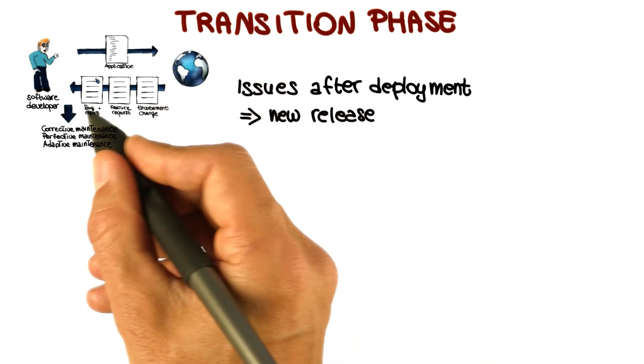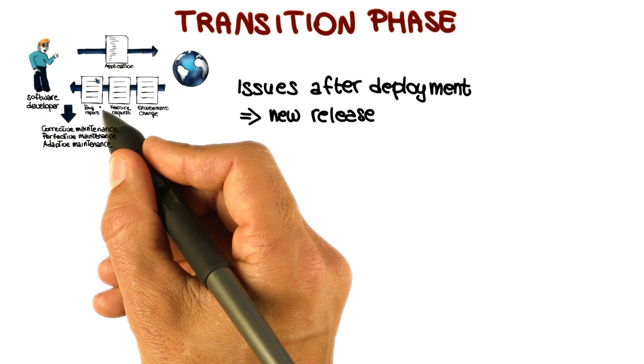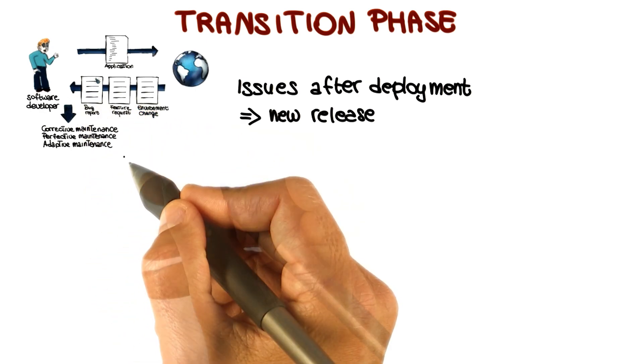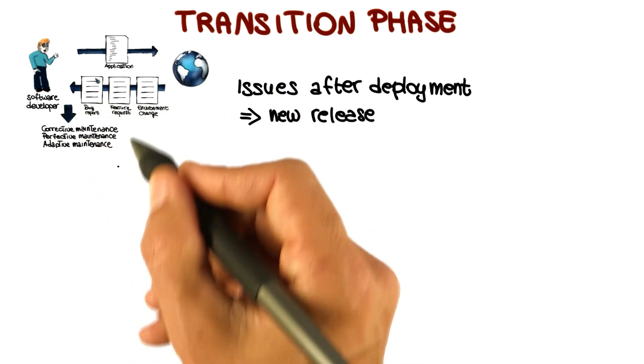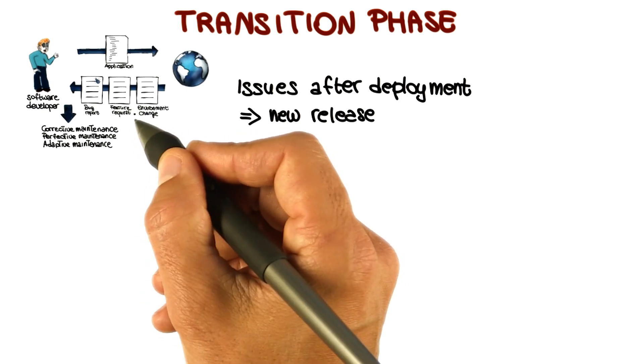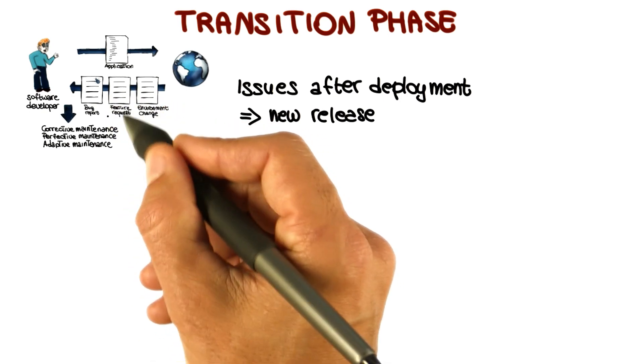Specifically, users might report failures that they experienced while using the system, so what we call bug reports, or they might report improvements that they might want to see in the software. So typically, these will be new feature requests.